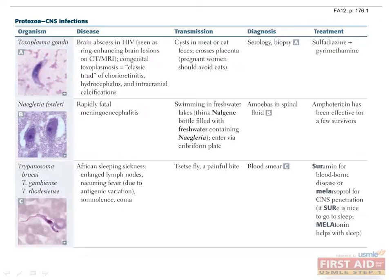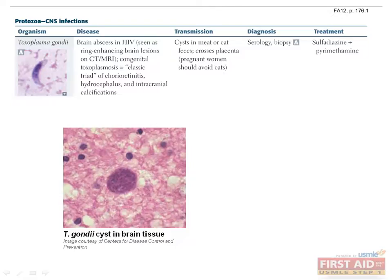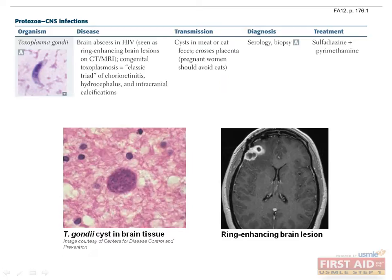Now let's move on to protozoa which cause CNS infections: Toxoplasma gondii, Naegleria fowleri, and Trypanosoma brucei. Toxoplasma gondii is the T in TORCH, a mnemonic for infections that cross the placenta. A neonate born with toxoplasmosis will present with chorioretinitis, hydrocephalus, and intracranial calcifications. This is why pregnant women should avoid cats, whose feces often carry the cyst form of Toxoplasma gondii. Also watch out for toxoplasmosis in HIV patients, who will present with brain abscesses. Remember the phrase ring-enhancing lesion, which describes how toxoplasmosis abscesses appear on CT and MRI imaging. Treat with sulfadiazine and pyrimethamine.